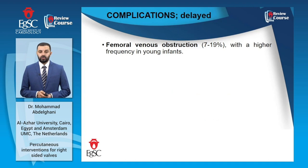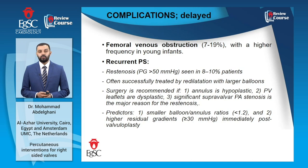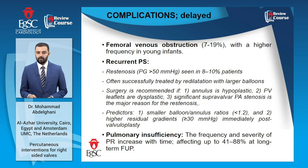On the longer run, some complications are noteworthy, including femoral venous obstruction, which is more common in small infants. Recurrent pulmonary stenosis is seen in up to 10% of patients and is often successfully treated with repeat dilatation. Predictors include a smaller balloon-to-annulus ratio and a higher residual gradient immediately post-valvuloplasty. Pulmonary insufficiency is also a common complication; its severity and prevalence increase over time, though its clinical significance is not very well established.